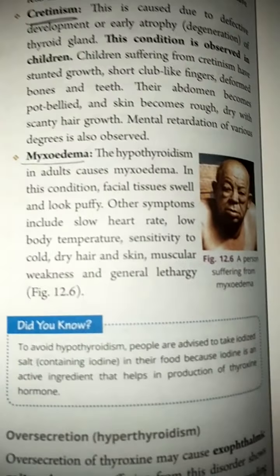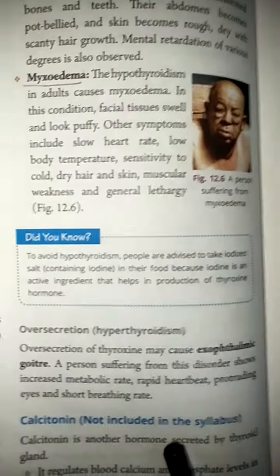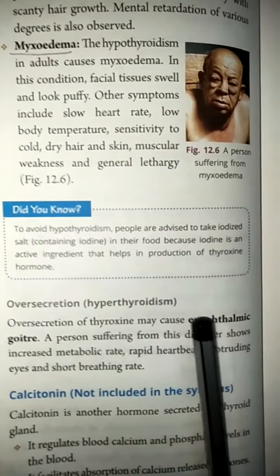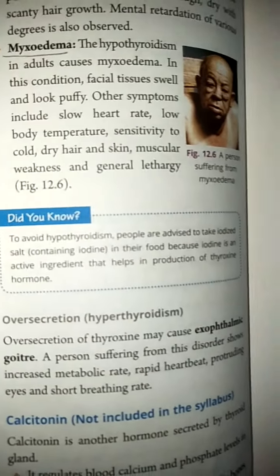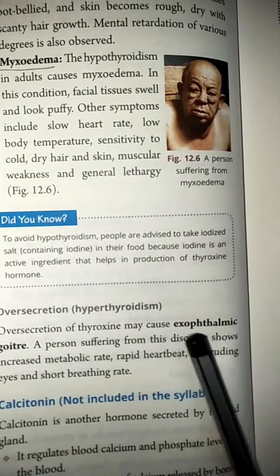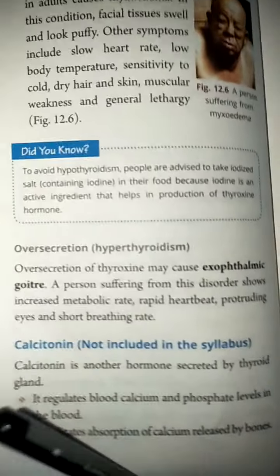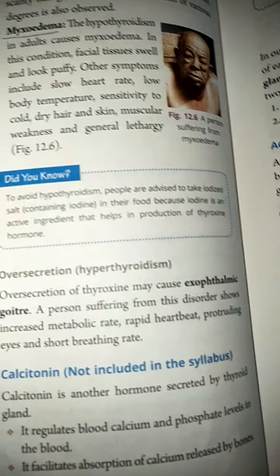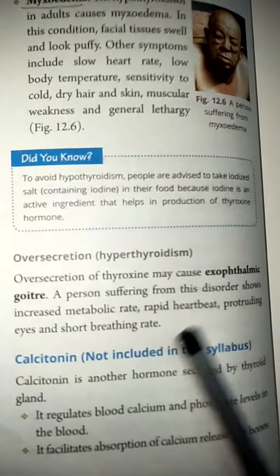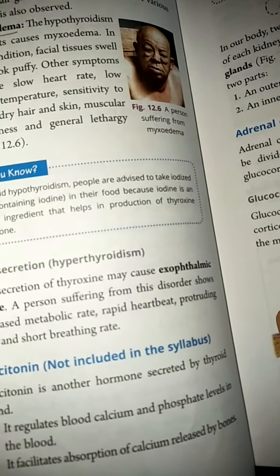If there is oversecretion of thyroxine — also known as hyperthyroidism — it is caused by exophthalmic goiter. What happens is that the metabolic rate is increased, heart rate is increased, and the breathing rate becomes rapid.